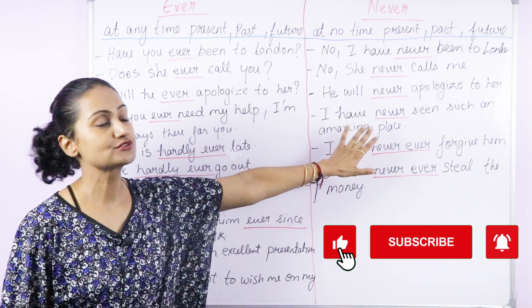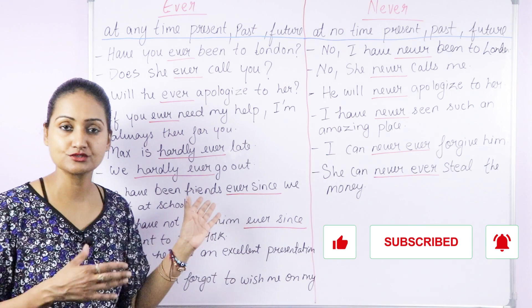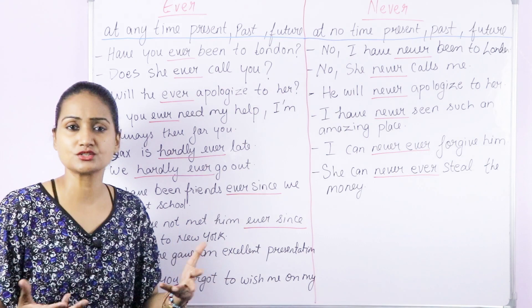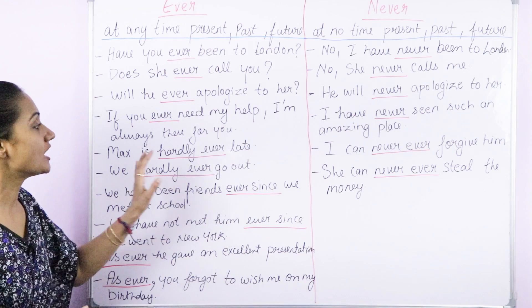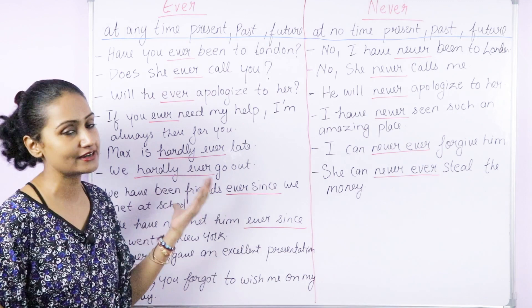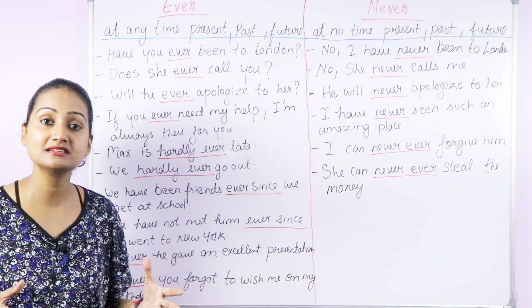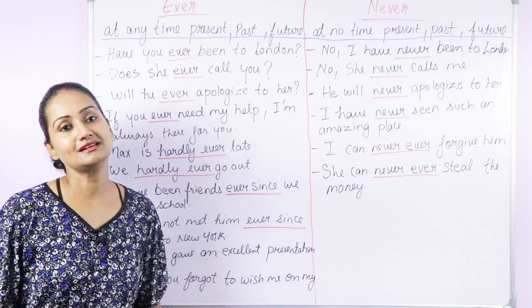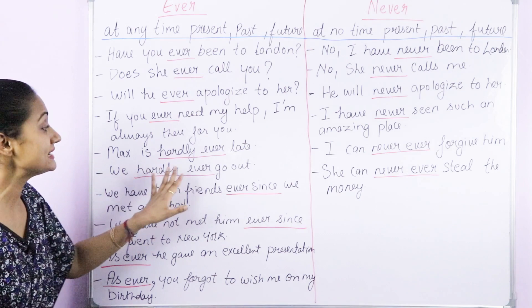Sometimes we use the phrase 'hardly ever,' which means almost never. Never means at no time, but hardly ever means maybe once or twice — but almost never. For example: Max is hardly ever late. He always comes on time; he is hardly ever late. If you say he is never late, that means at no time. But hardly ever means maybe once or twice he was late in the past, but generally he is on time. We hardly ever go out — we generally don't go out.